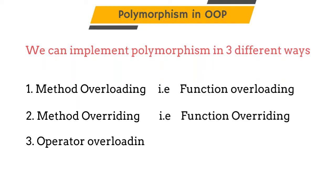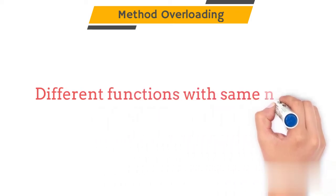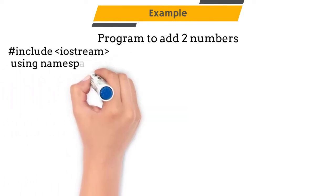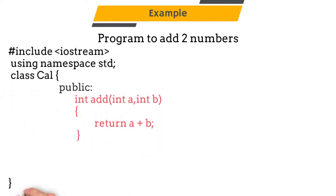In this video, we will learn about method overloading. Method overloading is a type of polymorphism which allows us to create different functions with the same name. Consider a program where I want to add two integers. Then I will create a function called add which will take two integers as a parameter and return the addition of it.